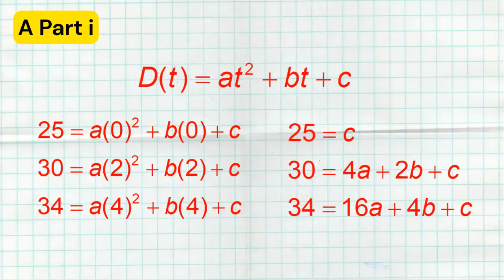So all we have to do is plug in zero, and we know the output was 25. Plug in two, we know the output was 30. Plug in four, we know the output is 34. Now, you could certainly leave this as your answer. But we could also do a little bit of math. We know that the A and the B are going to turn into zero when we do that first equation, so we just get 25 equals C. Two squared is four, and then we could simplify that second equation to 30 equals 4A plus 2B plus C. And then we also know four squared is 16, so we could also simplify that bottom equation as well.